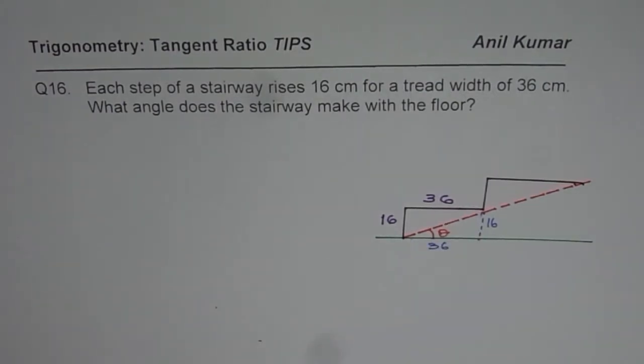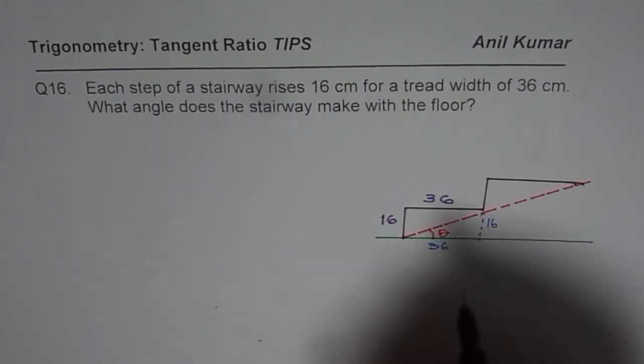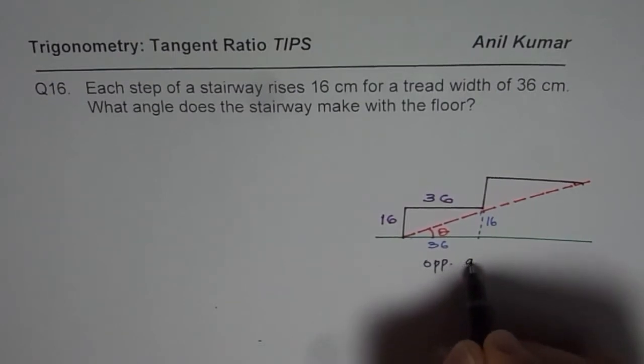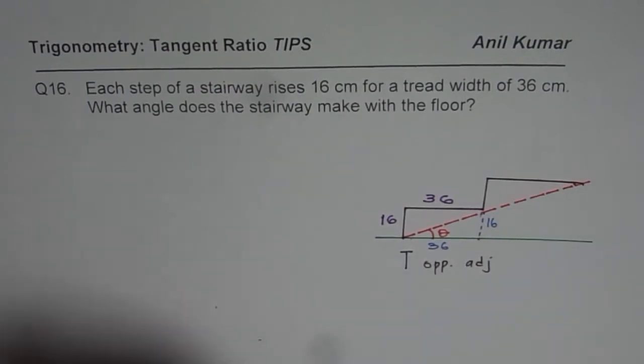So which ratio should I use to find theta? We know opposite side and we know adjacent side. So these two gives us tan. So we are looking for tan.